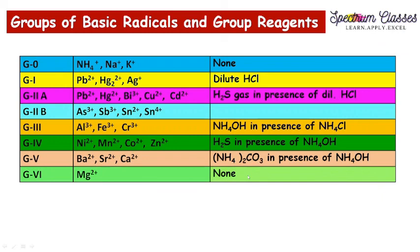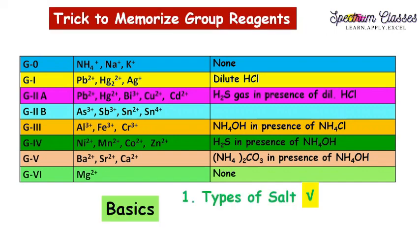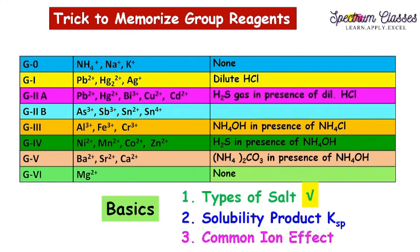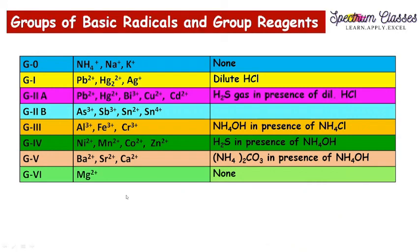In the next video we are going to discuss the next basic points — solubility product and common ion effects — which are again very important concepts to know before doing experiments for acid and basic radical analysis. I hope you find this video helpful and interesting. Please write in the comment section, subscribe to my channel, and give a thumbs up. Thank you for watching.